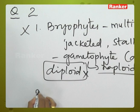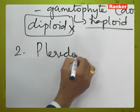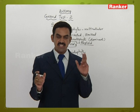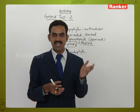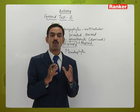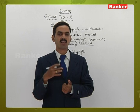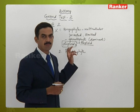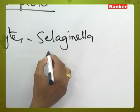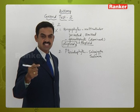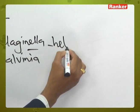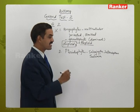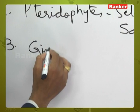Statement two is about pteridophytes, which are vascular cryptogams. Homosporous means all spores in a sporangium are the same type; heterosporous means more than one type — microspores and megaspores. Selaginella and Salvinia are given as homosporous, but they are actually heterosporous. So statement two is incorrect. Statement three: Ginkgo is a living fossil belonging to gymnosperms, not angiosperms — so statement three is also incorrect.